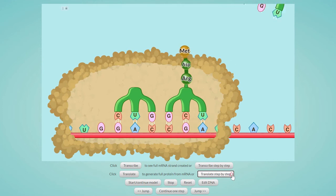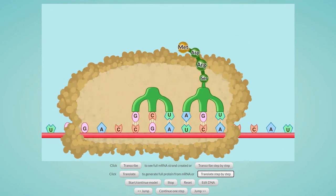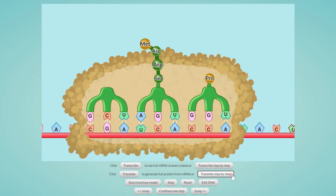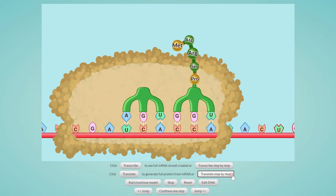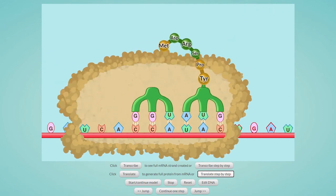The next codon, UCA, codes for serine, SER, followed by CCA, coding for proline, PRO. UAC codes for tyrosine, TYR.